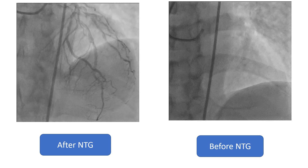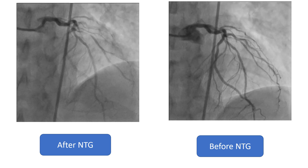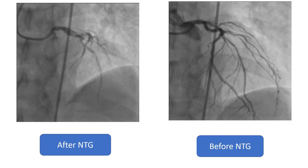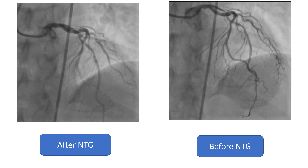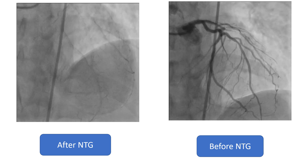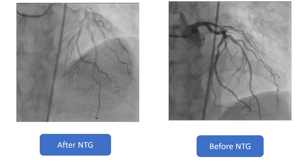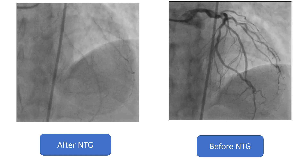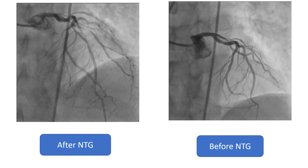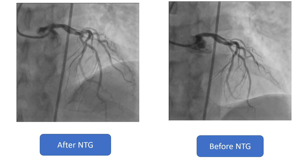Nitroglycerin is very important in coronary intervention. Sometimes it reveals the real size of the vessel. It's clear here that the diagonal is a significant branch when compared to its size before giving nitroglycerin. The diagonal appears to be very large and significant. For the LAD, we needed to do FFR, and it was 0.71, which was significant.